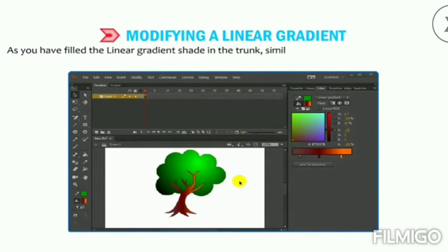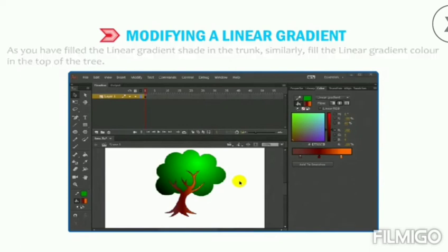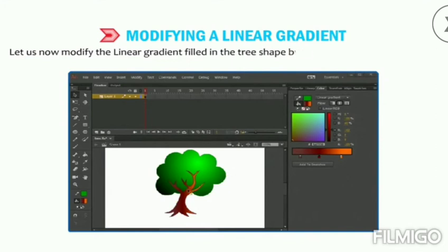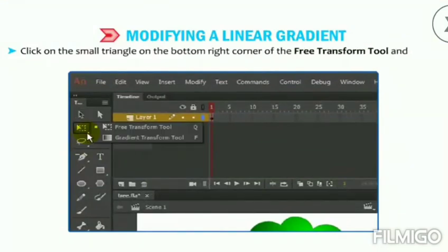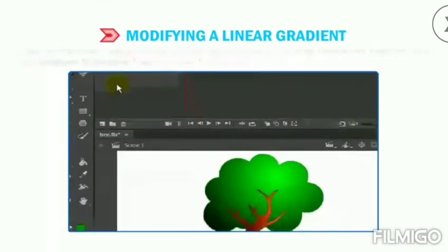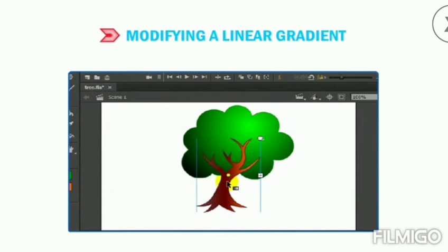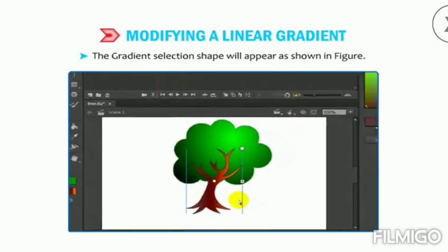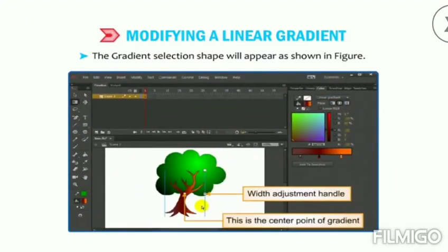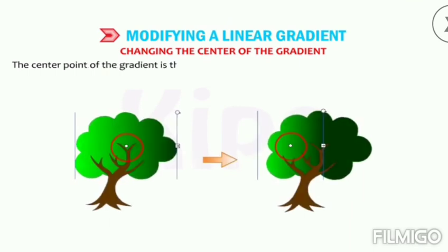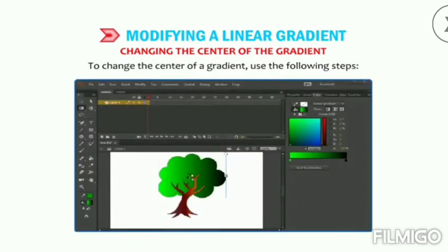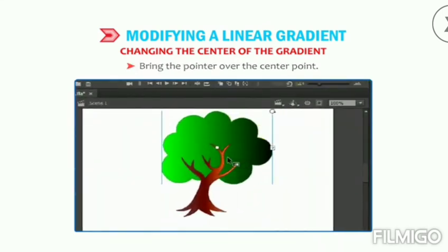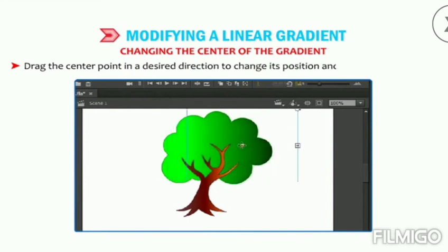To modify a linear gradient filled in the tree shape, use the Gradient Transform tool. Click on the small triangle at the bottom right corner of the Free Transform tool and select the Gradient Transform tool from the Tools panel. Click on the object filled with gradient color — the gradient selection shape appears with adjustment handles. To change the center of the gradient, bring the pointer over the center point and drag it in the desired direction.